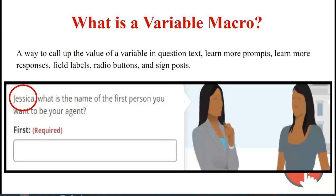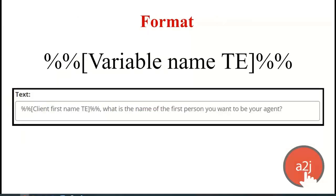The first one is variable macros. Variable macros are a way to call up the value of a variable in question text, learn more prompts and responses, field labels, radio buttons, and signposts. It's a way to use information the end user has already told you — like their name, as shown in the screenshot — and display it back to them. The format is: double percent signs, open bracket, variable name, close bracket, double percent signs. Anywhere you use this format, A to J Author will pull out the value of that variable and display it.